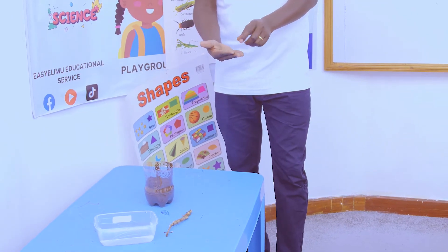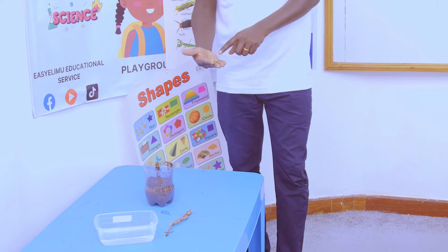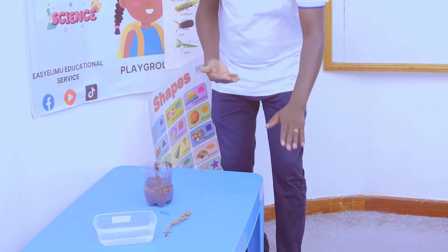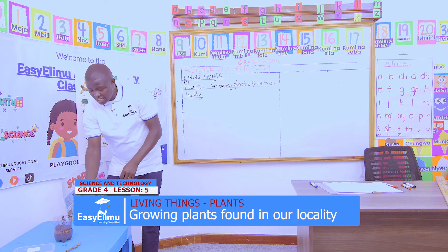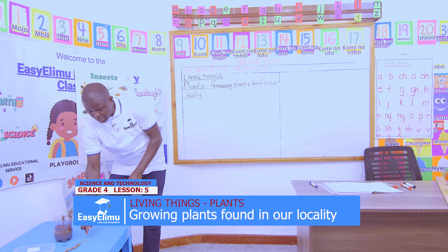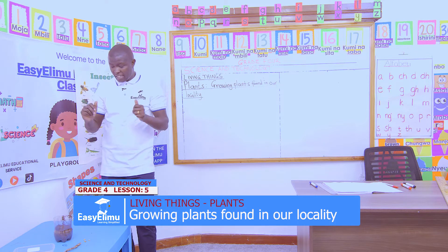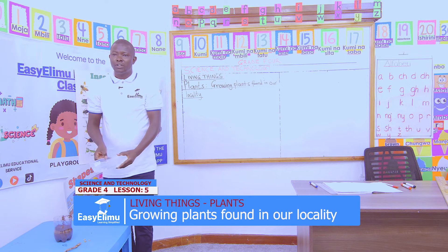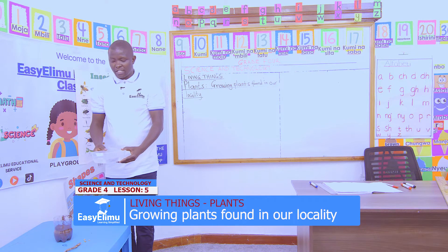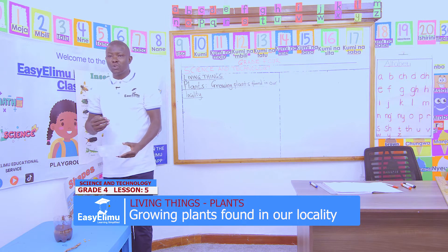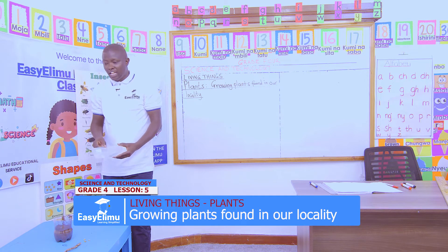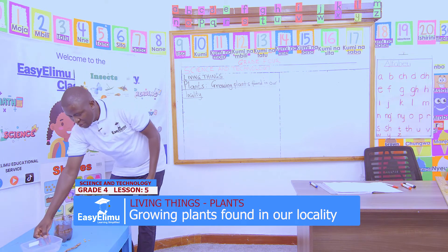These seeds will germinate after we plant them, after some time. Plants grow from small to big, and these seeds are the ones we plant so that they can germinate and grow to be a big plant. We also have water — plants need water so that they can germinate, grow, and become the big plants we need at the end of our growing period.